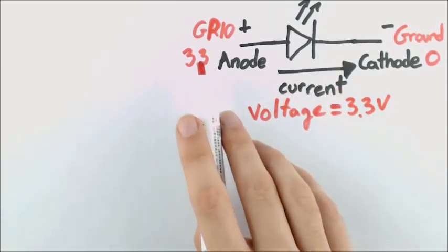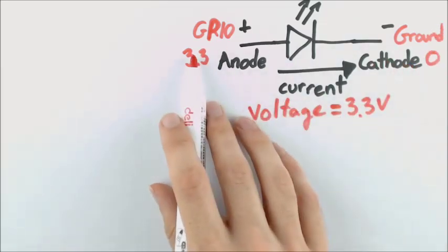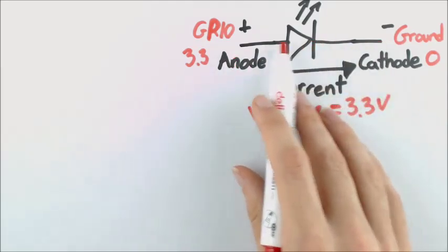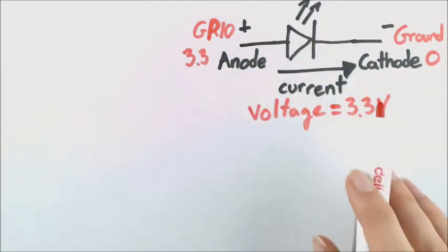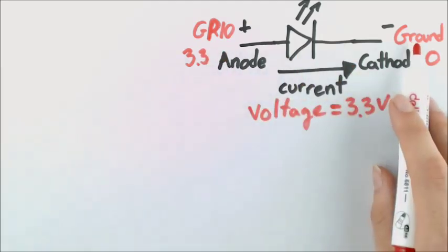Now it's important to note that our current is going from left to right, because if our current tried to go from right to left, our LED wouldn't work. Actually, the LED would prevent current from passing through. So that's a special property about LEDs. It's different than light bulbs. Current can only go in one direction.